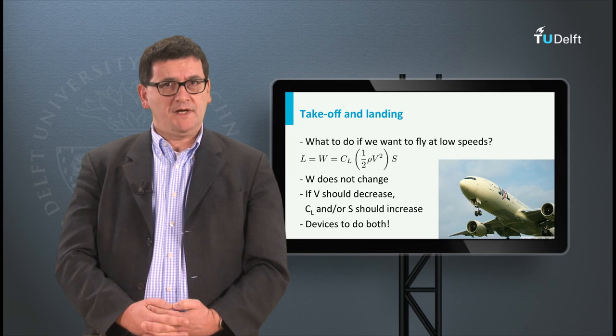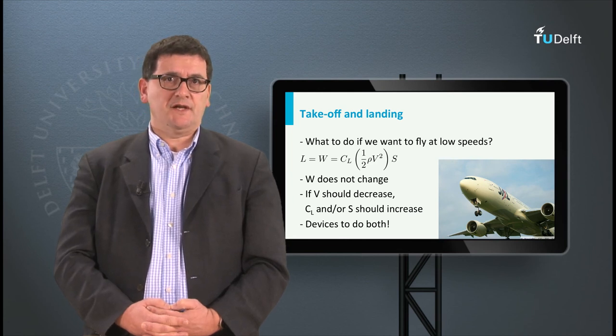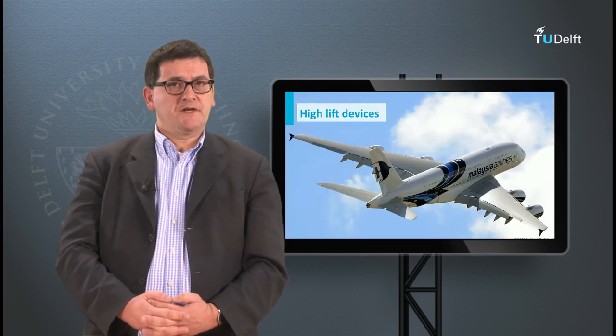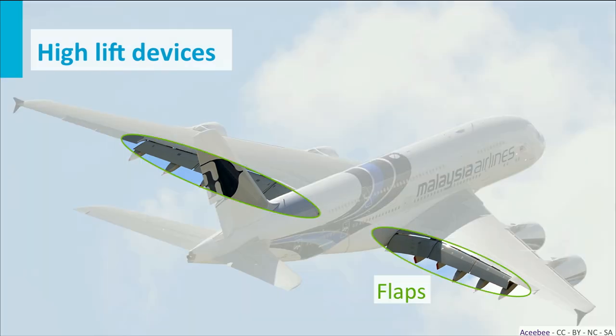The other two parameters, the lift coefficient and the wing surface area, can be changed by using all kinds of high lift devices. In this picture you see an Airbus A380 with high lift devices. First I show you the flaps, which are used during landing and take-off. Second we can see the slats or leading edge devices, which are mainly used during take-off. Both devices increase the wing surface area and to some extent they increase the camber of the wing profile and thereby increase the lift coefficient.